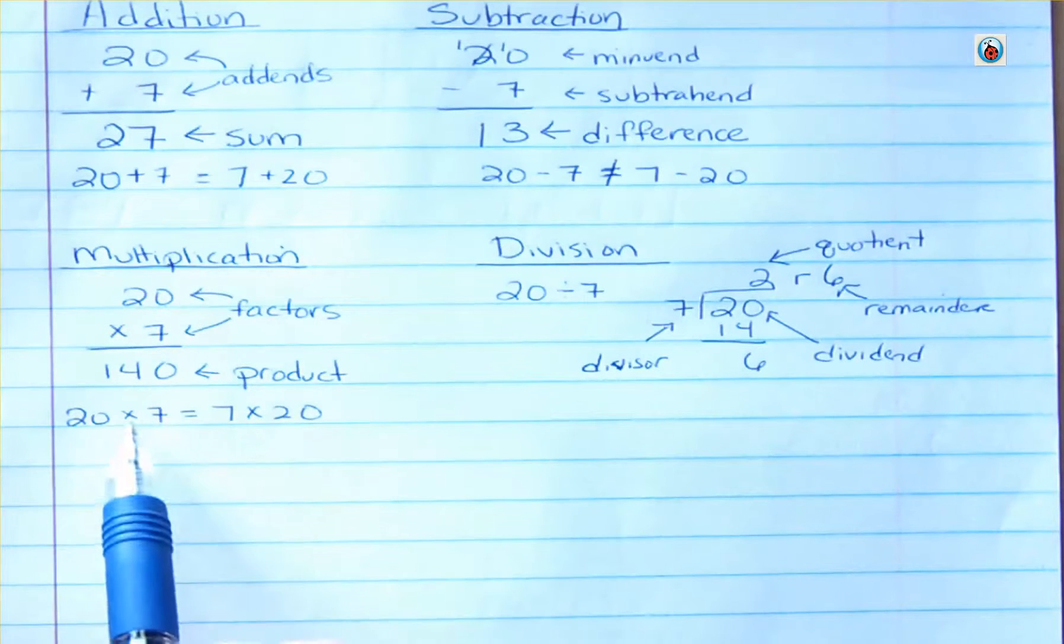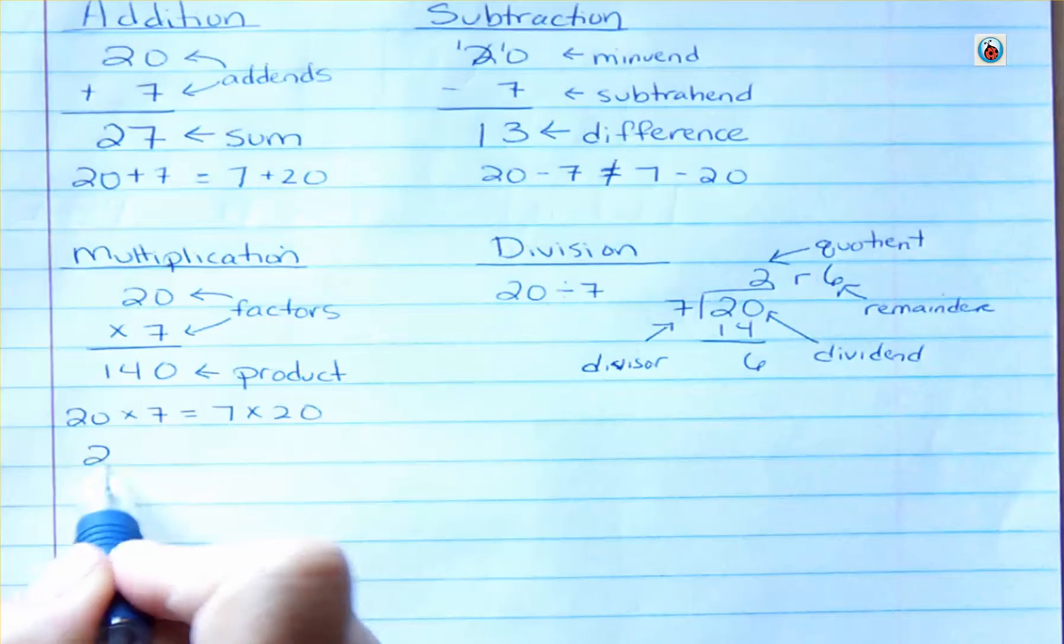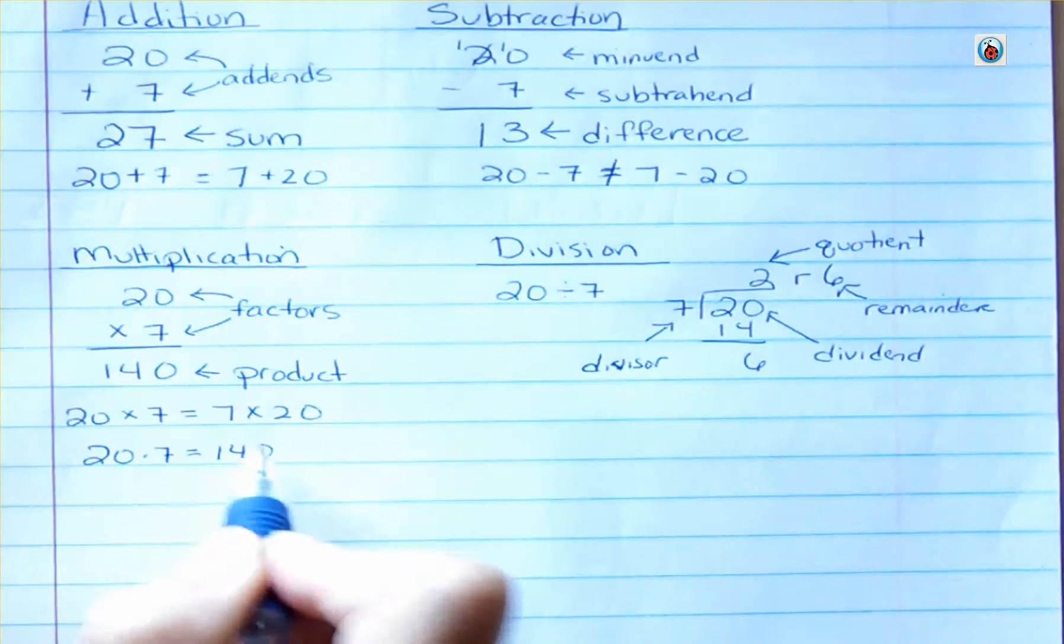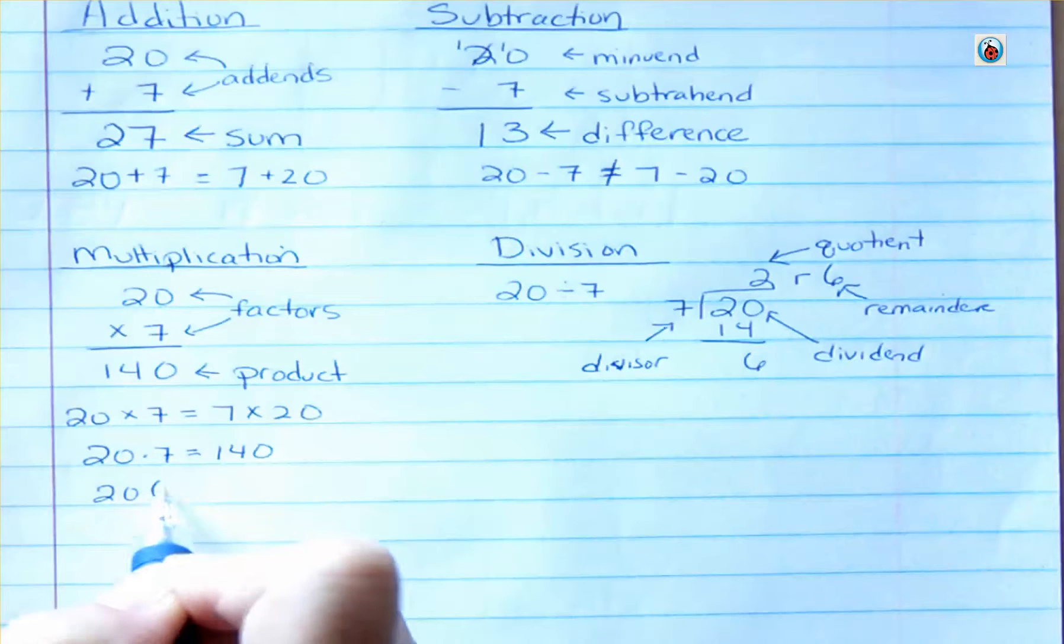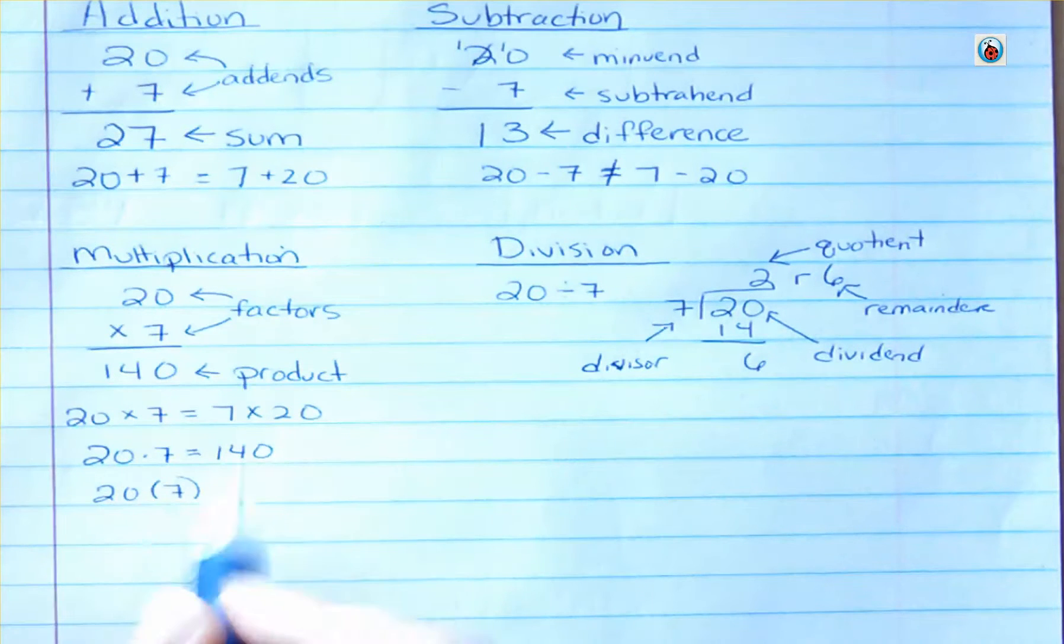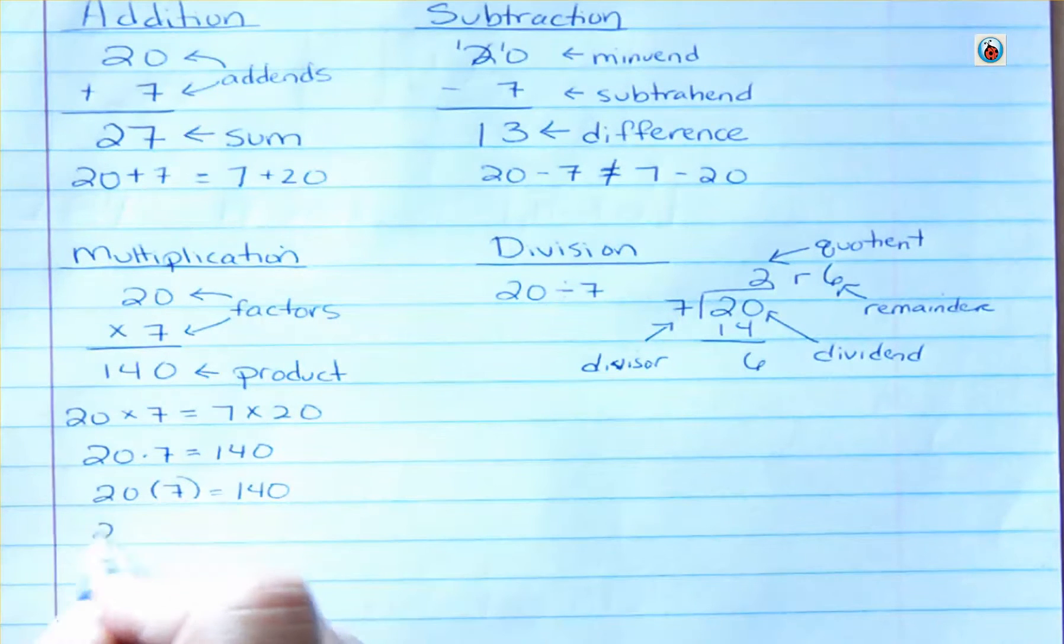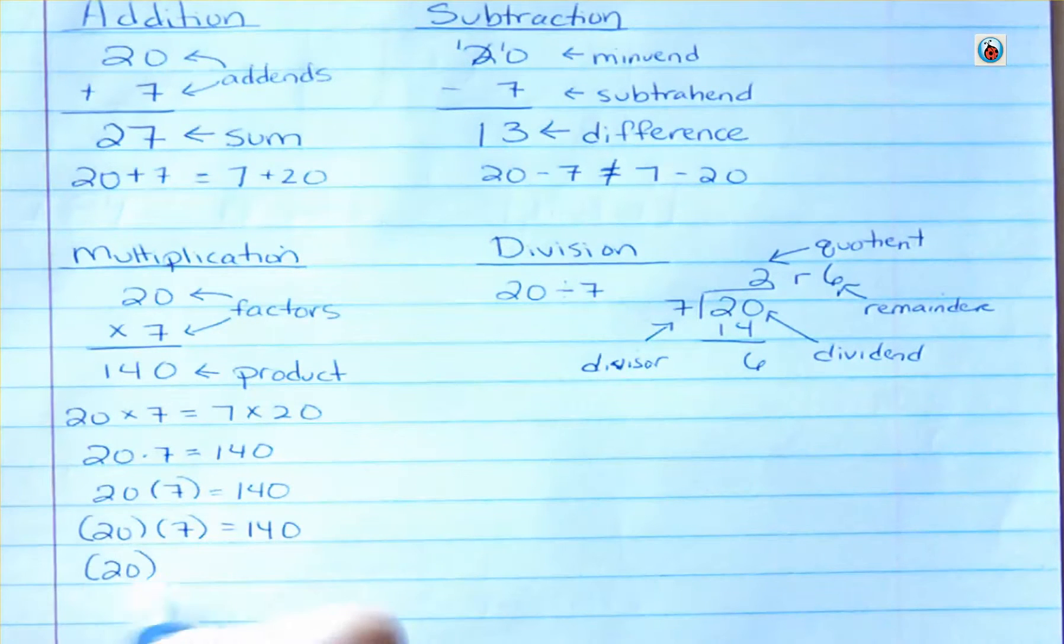So we're used to writing multiplication with an X, but we could also say 20 times 7. That would be another way to write that. Or I could say 20, and I could put parentheses around it. If I don't put any operation in between those, I assume that means multiplication. So I could also write it that way. In fact, I could do 20 times 7. That means the same thing. As long as I don't have an operation between those two parentheses, it means to multiply those. I could even do this. Those all equal the same thing.